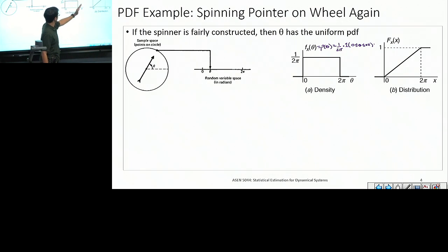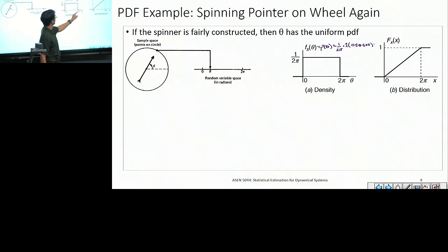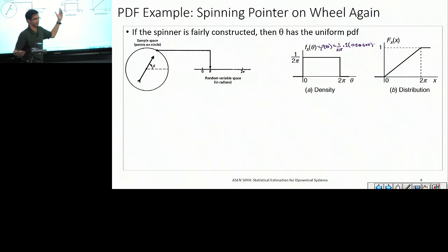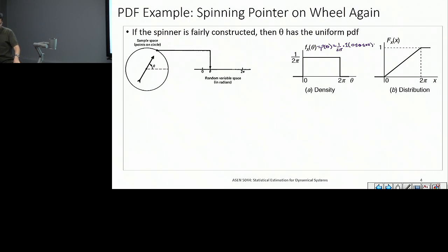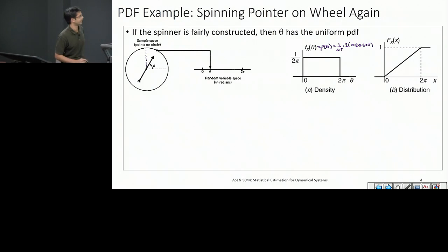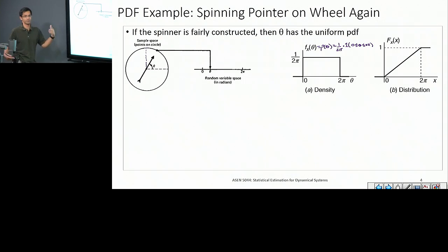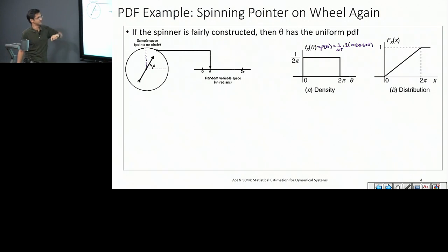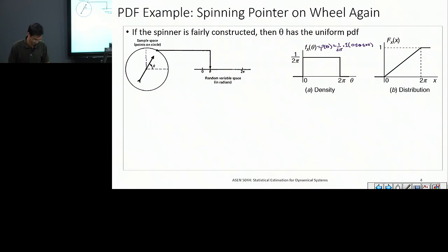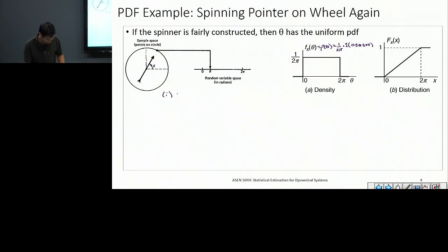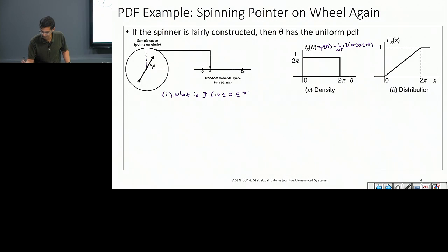How do I actually use this density function? It tells us what probabilities are over intervals. If I ask what's the probability that theta lands in the first quadrant of the circle, I can use the density function. Intuitively the answer is 1/4. Formally, that's the probability that theta is between 0 and π/2, which equals the integral from 0 to π/2 of p(θ) dθ.